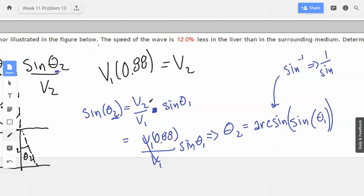So theta 2, this guy, needs a 0.88 in there. So arcsine of 0.88 times sine of theta 1. That seems reasonable.